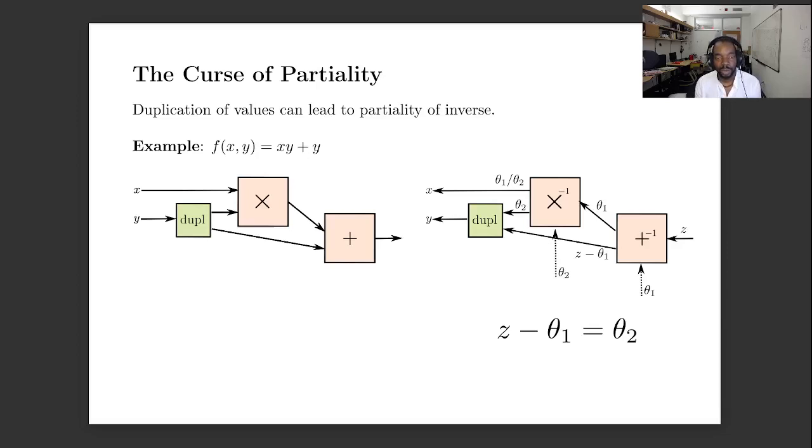One reason it's hard is this problem which we call partiality. So in this example we have f of x and y equals x y plus y. The key point here being that y is used twice, which I'm showing with this duplication function.